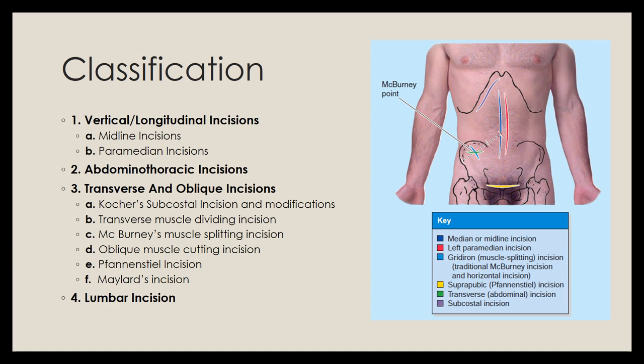A brief classification of common incisions: vertical or longitudinal incisions include the midline incision (in the midline) and the paramedian incision (2–5 cm lateral to the midline). Abdominothoracic incisions allow access to both abdominal and thoracic cavities. Transverse and oblique incisions include Kocher's subcostal incision, the transverse muscle-dividing incision, the McBurney's muscle-splitting (gridiron) incision, and the Pfannenstiel incision used for cesarean sections.